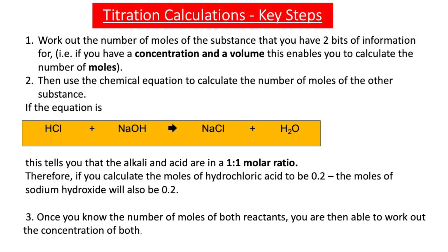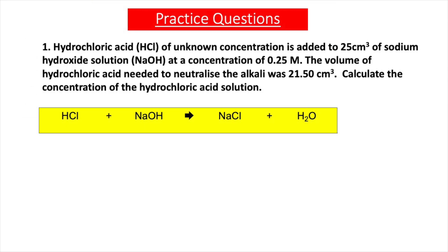Before we do some practice questions, let's remind ourselves of the key steps for solving titration calculations. Step one: work out the number of moles of the substance that you have two bits of information for — if you have concentration and volume, you can calculate the moles. Step two: use the chemical equation to calculate the moles of the other substance. For example, HCl reacting with NaOH in a one-to-one ratio means if moles of HCl = 0.2, then moles of NaOH = 0.2. Once you know the moles of both reactants, you can work out the concentration of both.